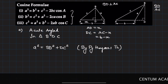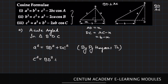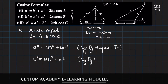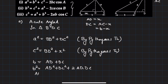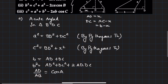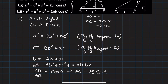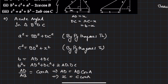By Pythagoras theorem in triangle ABD: c² = BD² + x². Also, AD/AB = cosA, so AD = AB·cosA. Since AD was assumed to be x and AB is c, we get x = c·cosA.